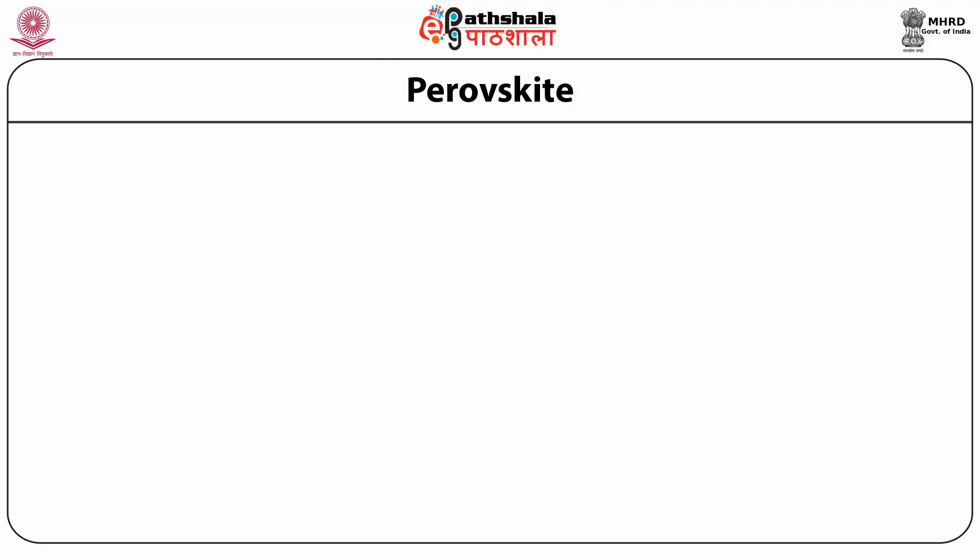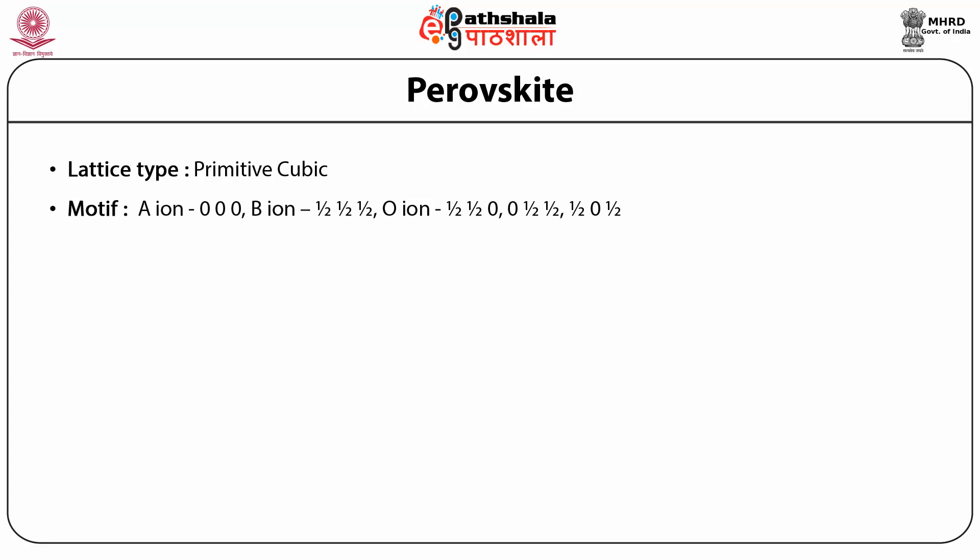Now let us discuss about the perovskite structure in detail. The lattice type of perovskite is primitive cubic. The motif is: for A ion it is (0,0,0); for B ion it is (½,½,½); and for oxygen ion it is (½,½,0), (0,½,½), and (½,0,½). So it has one formula unit per unit cell.